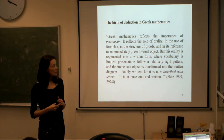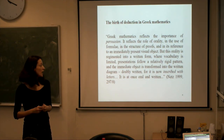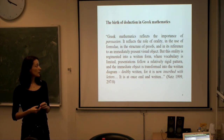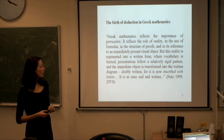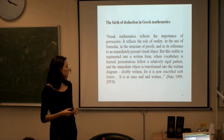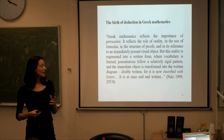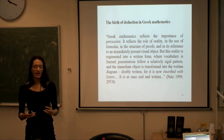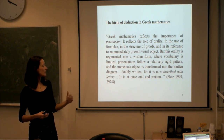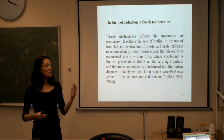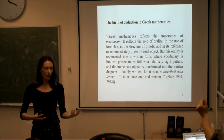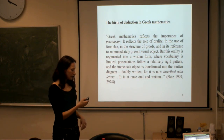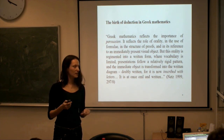Here's the quote: 'Greek mathematics reflects the importance of persuasion. It reflects the role of orality in the use of formulae, in the structure of proofs, and in its reference to an immediately present visual object. But this orality is regimented into a written form where vocabulary is limited, presentations follow a relatively rigid pattern, and the immediate object is transformed into the written diagram — doubly written, for it is now inscribed with letters. It is at once oral and written.' That's where I take this idea that proof both is and is not a dialogue — in between orality and writing.